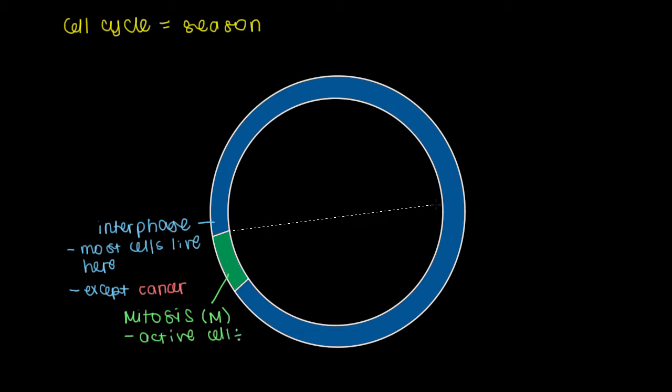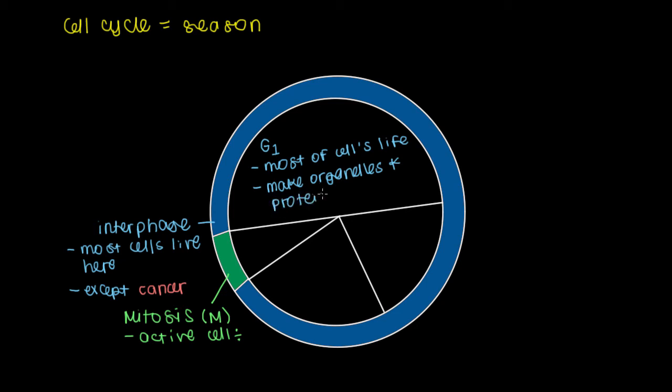Now there are a few other phases that occur within interphase. The first part of interphase is a growth phase, and it's usually abbreviated G1. As you can see here, G1 is the longest phase of the cell cycle, so most of a cell's life is spent here. And it's in this phase that we produce extra organelles such as ribosomes, and proteins.